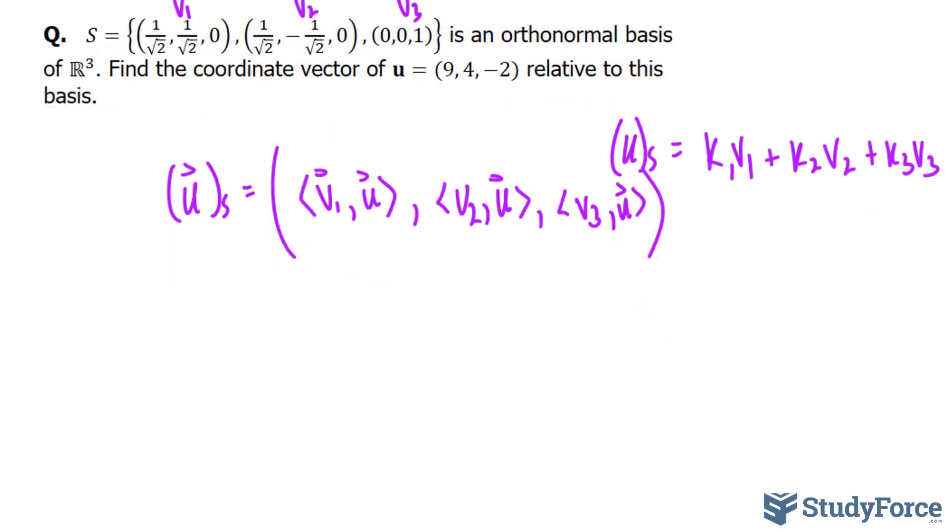The way you do that is you multiply the components of v₁, for example, with those of the other vector u, and then you take their sum. So I'll show you this one. We have 1 over the square root of 2 multiplied to 9, plus, again, 1 over the square root of 2 multiplied to 4, plus 0 times negative 2.